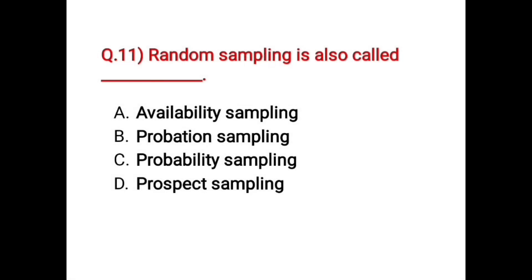Next question: random sampling is also called — Option A, probability sampling. Option B, probation sampling. Option C, probability sampling. Option D, prospect sampling. The correct answer is Option C, probability sampling. Random sampling is also called probability sampling.